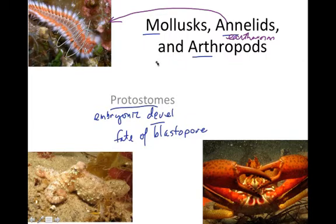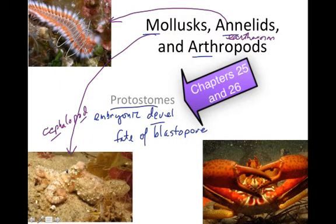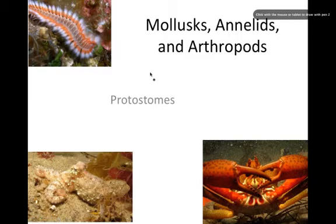Here's an example of a mollusk — specifically a cephalopod, meaning 'head-foot.' There's really no distinct separation between where the head and the feet meet, but the octopus has clearly developed tentacles, eyes, and a nervous system. Remember, the clam did not have a distinct head region, but mollusks in general do have that distinct head region.